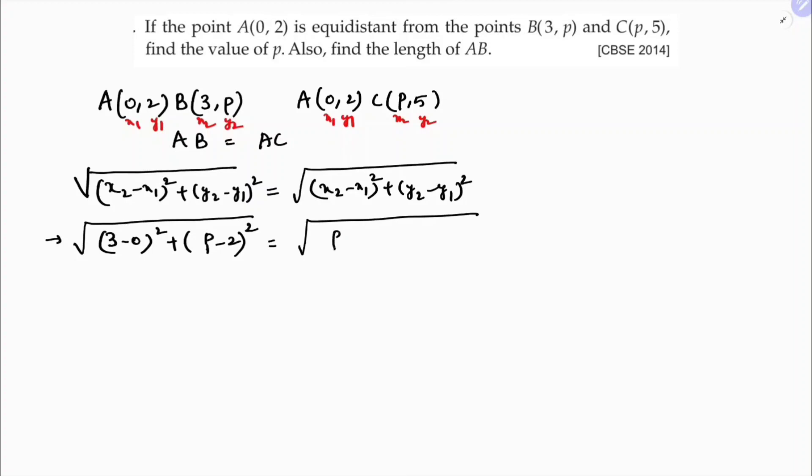Under root x2 is P minus 0 whole square and y2 is like 5 minus 2 whole square. I will do here like squaring on both sides because roots will get cancelled.